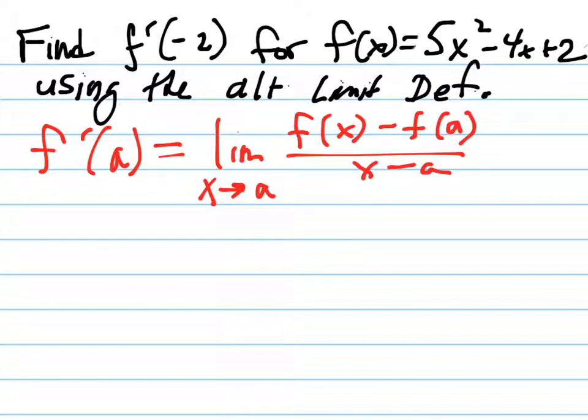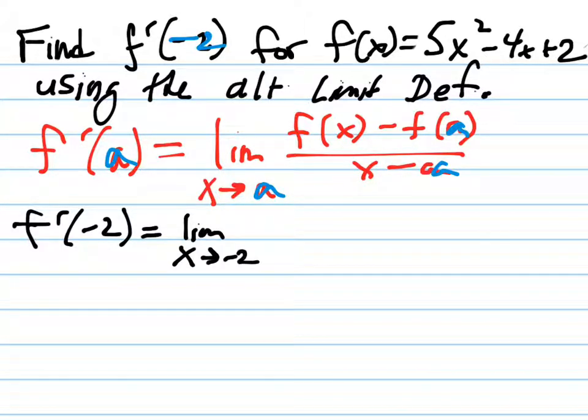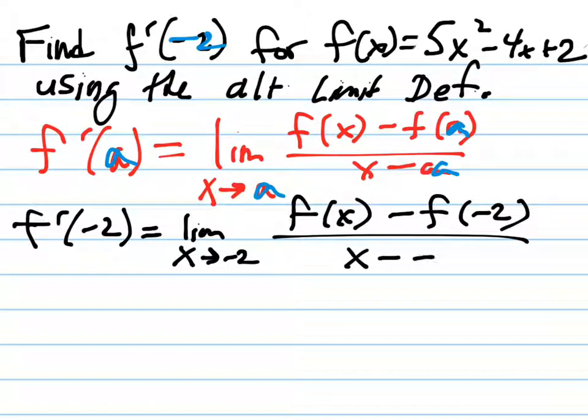All we're going to do is replace the number a which appears in these four places with the number negative 2. So doing so gives us f prime of negative 2, what we want, our question, is the limit as x approaches negative 2 of this statement: f of x minus f of negative 2 over x minus negative 2.